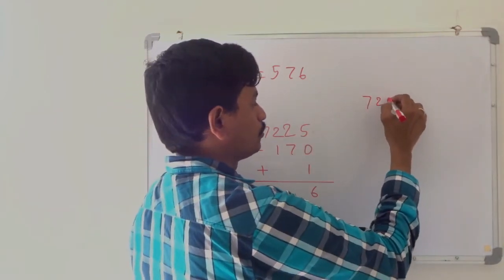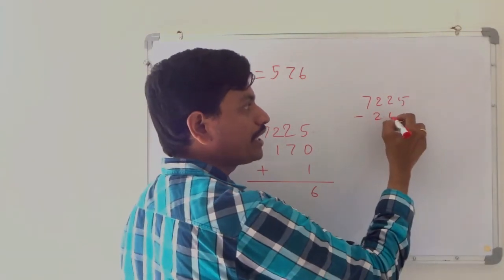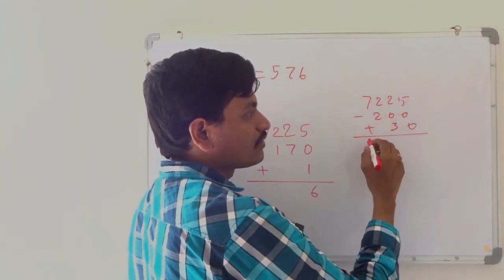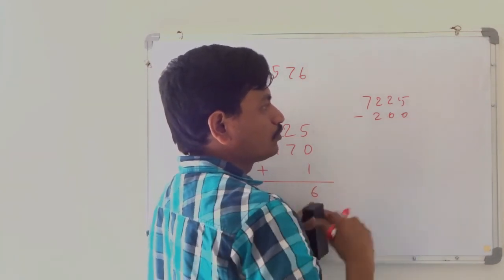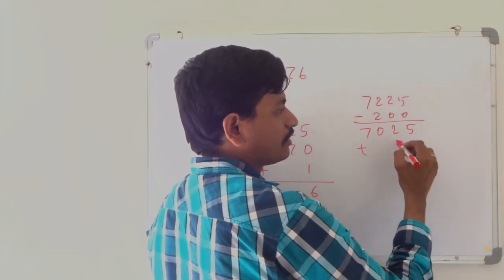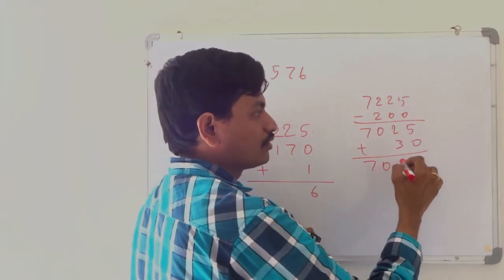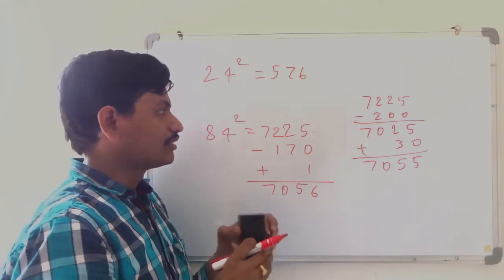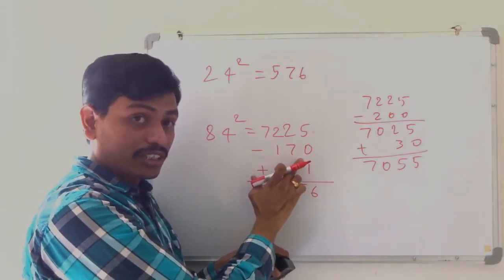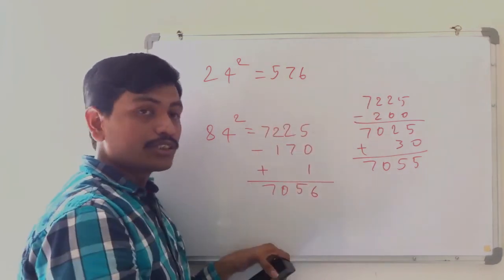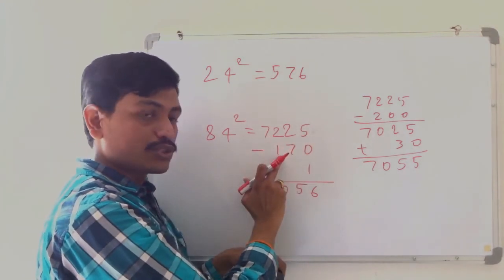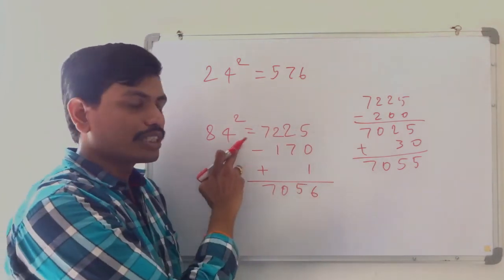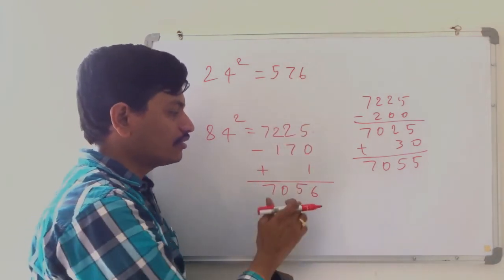So 7225 minus 170: first subtract 200, giving 7025, then add 30, giving 7055. But wait — the last digit for numbers ending with 4 will definitely be 6. So 7225 minus 170 is 7055, and plus 1 is 7056. So 84 squared is 7056.